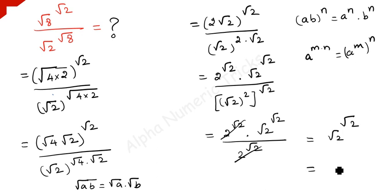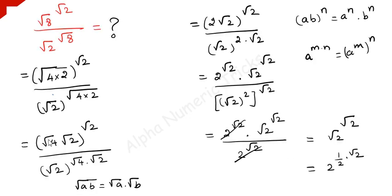Again, this can be written as: square root is 2 to the power half, so we have 2 to the power half times square root of 2. This can be further simplified as 2 to the power 1/2 times square root of 2 — and here, 2 can be written as square root of 2 times square root of 2, to the power square root of 2. These two terms get cancelled, so we have 2 to the power 1 over square root of 2. This is the value of the given problem.